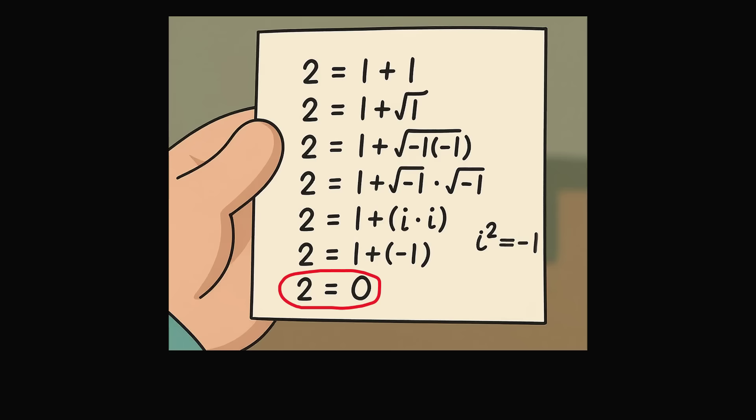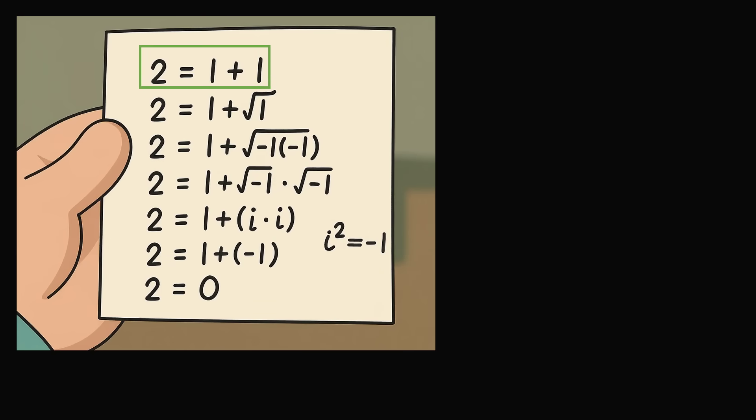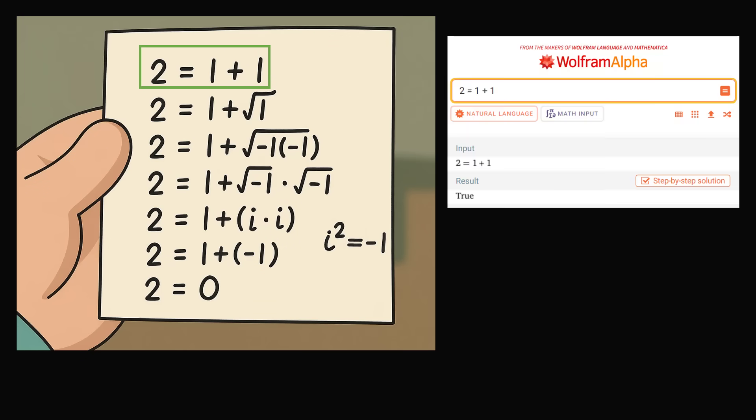In order to explain this supposed false proof in detail, let me go through each line step by step. The first equation is 2 is equal to 1 plus 1. This is of course a true equation. We can just input it into Wolfram Alpha and verify that we are starting off with a true equation. There's no problem here.